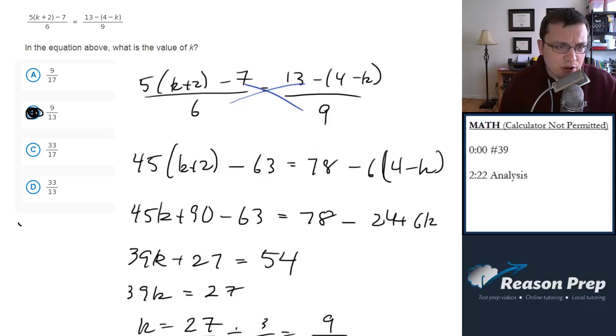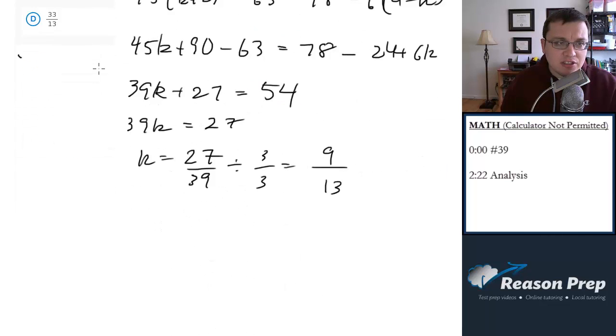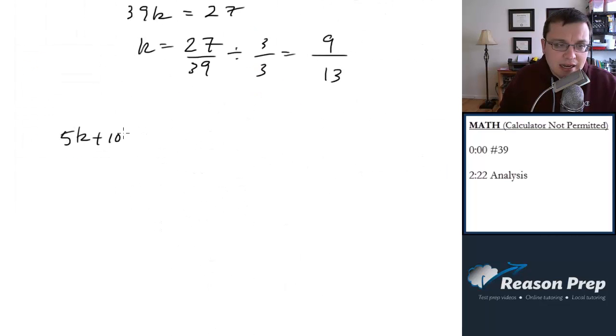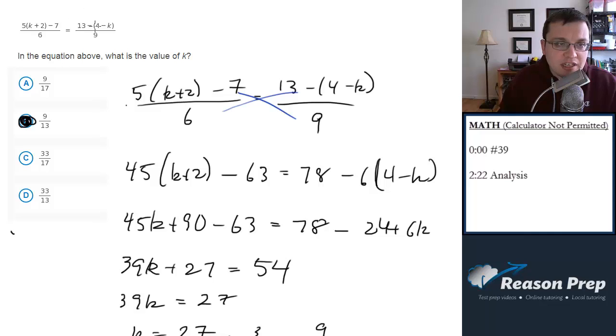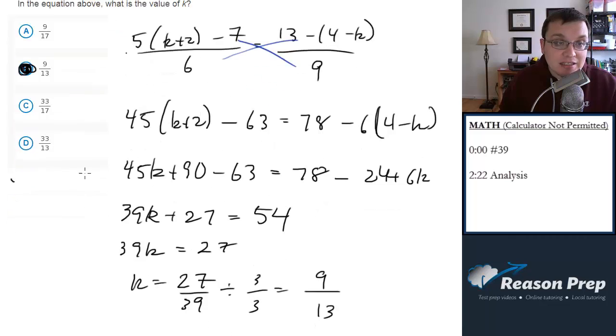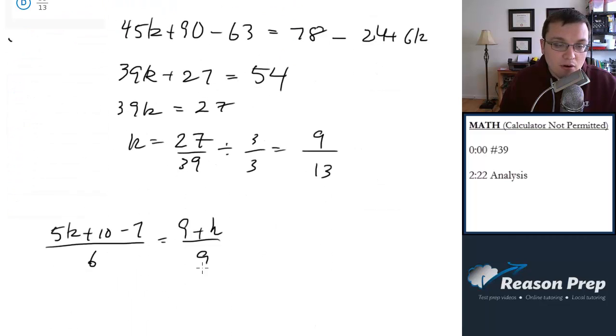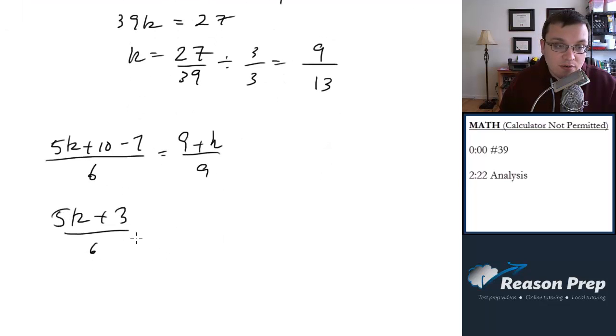I realized after further review, it would have been much easier to distribute these terms first and then cross multiply. So let me actually show you that before I talk some analysis here. And you'll see it's much easier. So 5 times k plus 2 is the same thing as 5k plus 10 minus 7 all over 6. And this equals 13 minus 4 minus k. So 13 minus 4 is 9. And then minus minus k is just positive k. So 9 plus k over 9. And this is going to be much easier to cross multiply because this just becomes 5k plus 3 over 6.